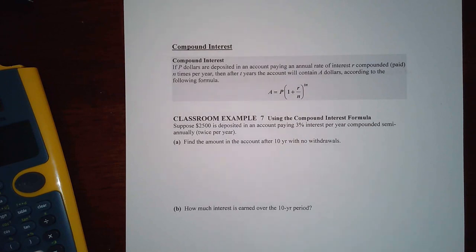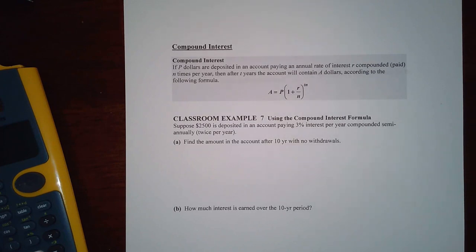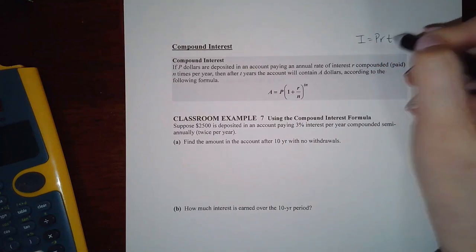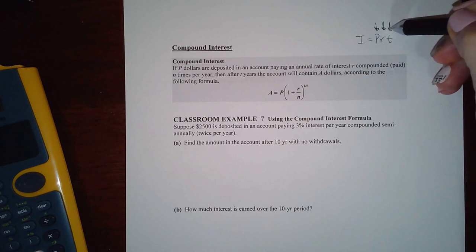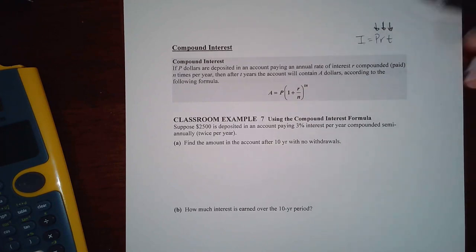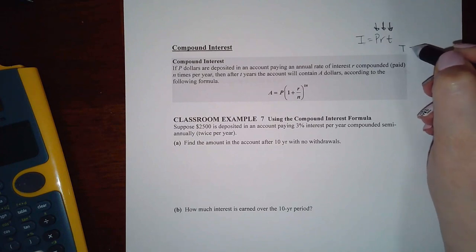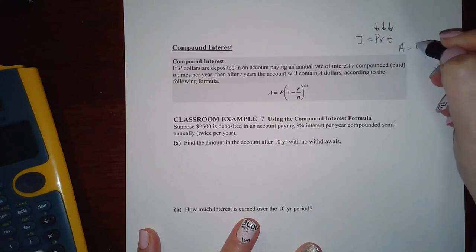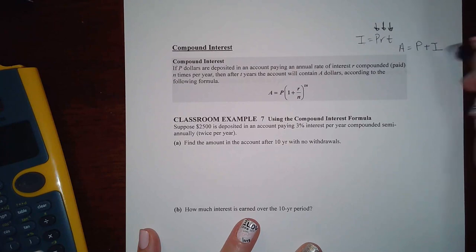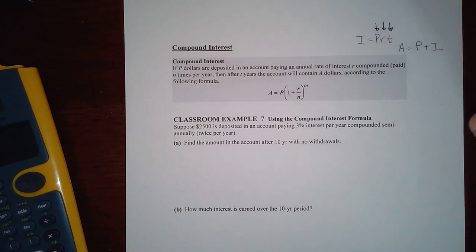Here we have the beginning of our word problems for exponential functions. Now that we have exponentials, we can talk about more complicated interest problems. Before, we always had the interest problem where you had PRT — that was called simple interest — where you took your investment or loan, multiplied it by the rate and by how long you had the loan, and that gave you the amount of interest.